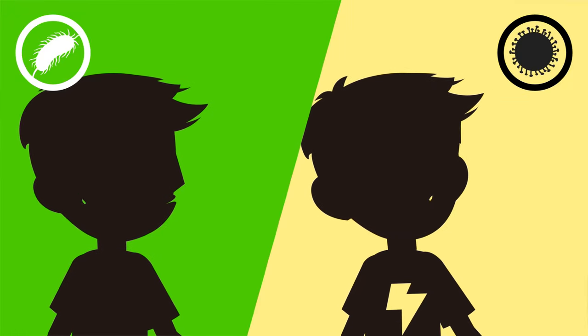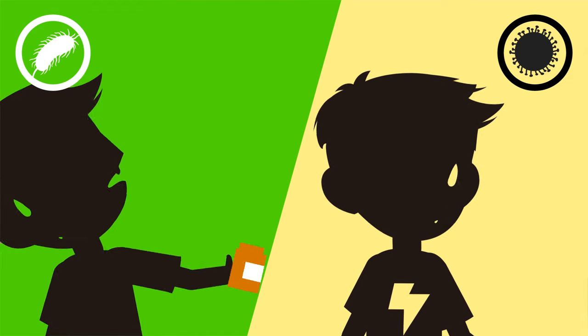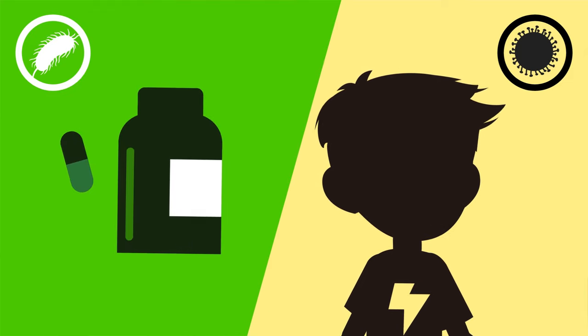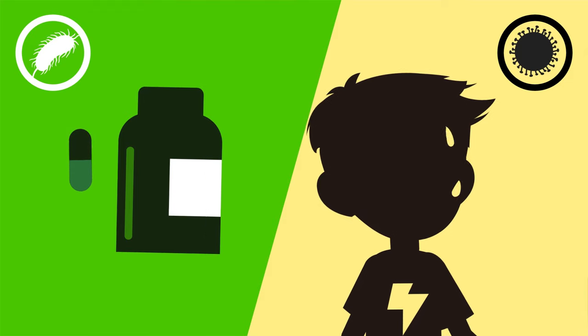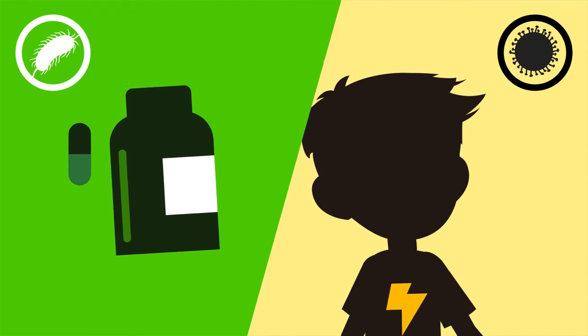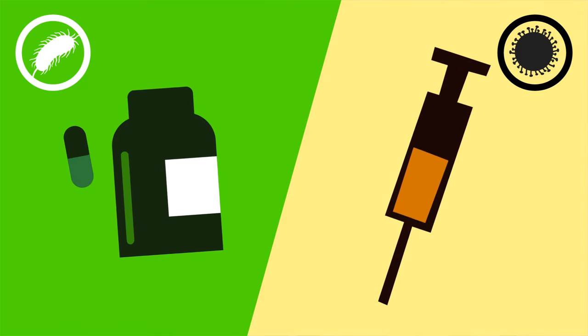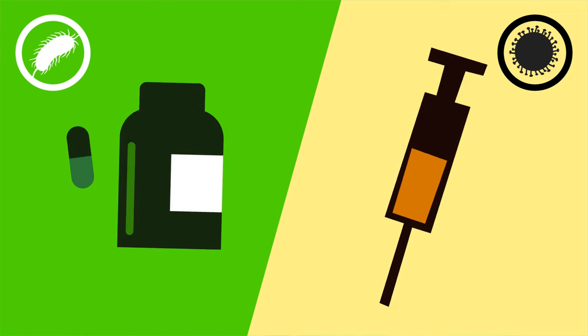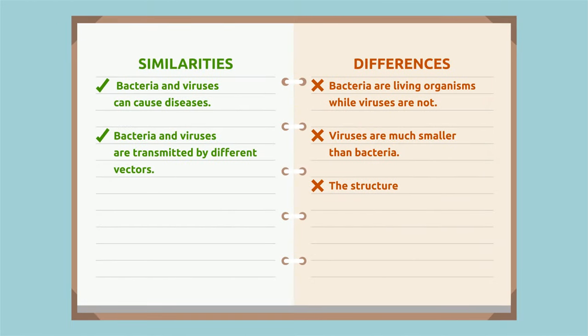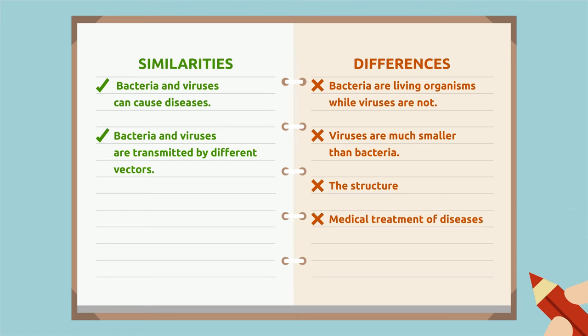To cure diseases caused by bacteria, it is necessary to take antibiotics. However, the best means to fight a disease caused by a virus is a vaccine. Vaccines help us to prevent diseases caused by viruses. The last difference to note down: medical treatment of diseases.